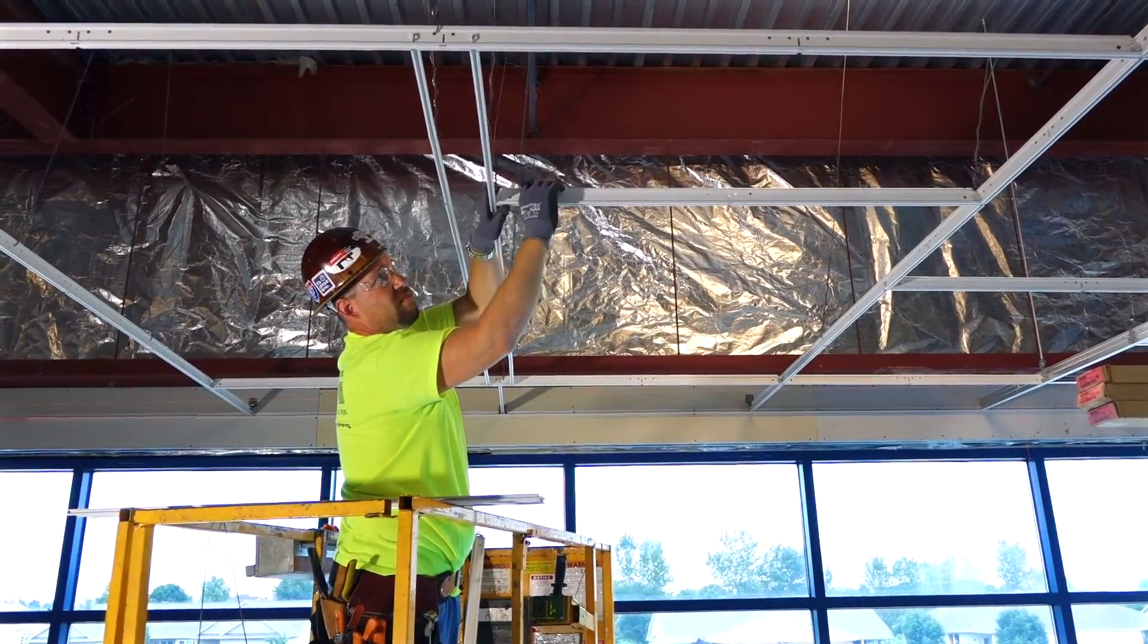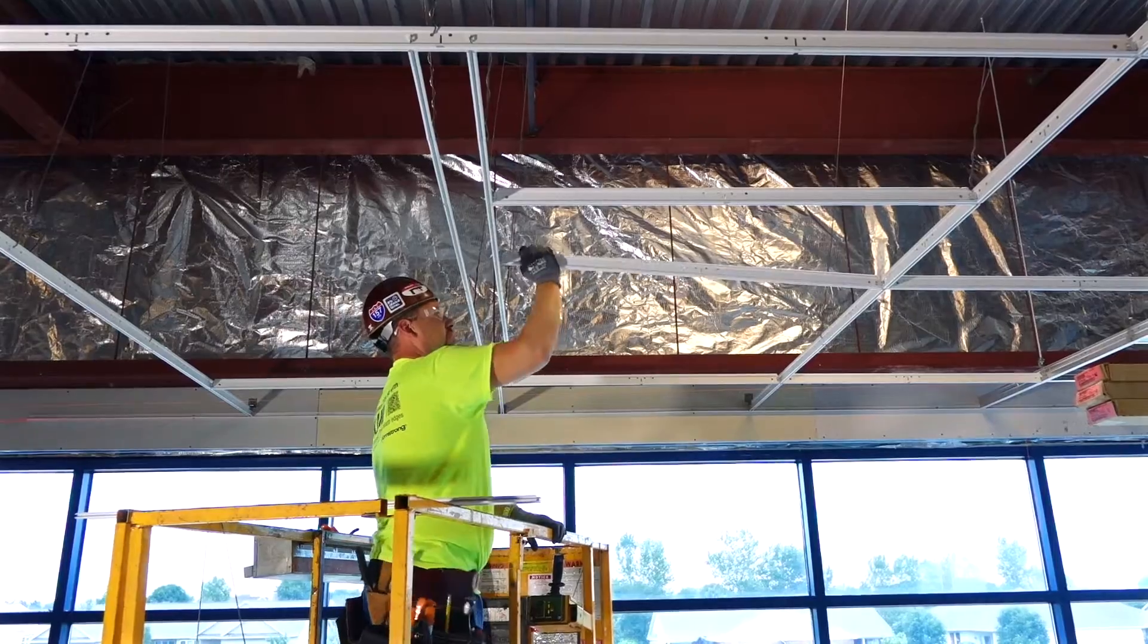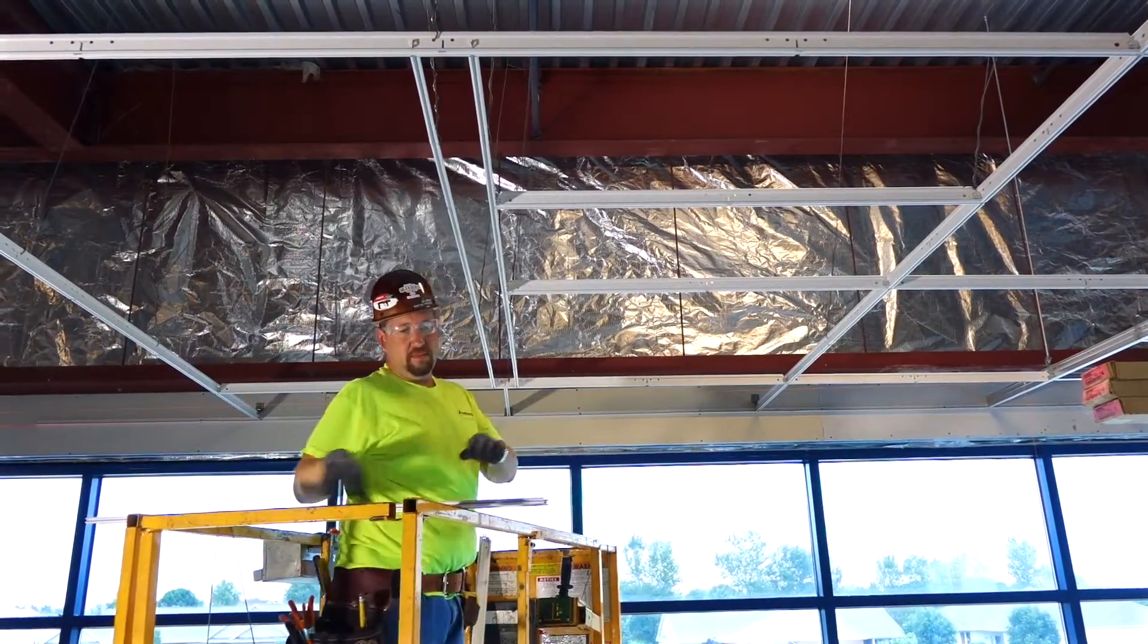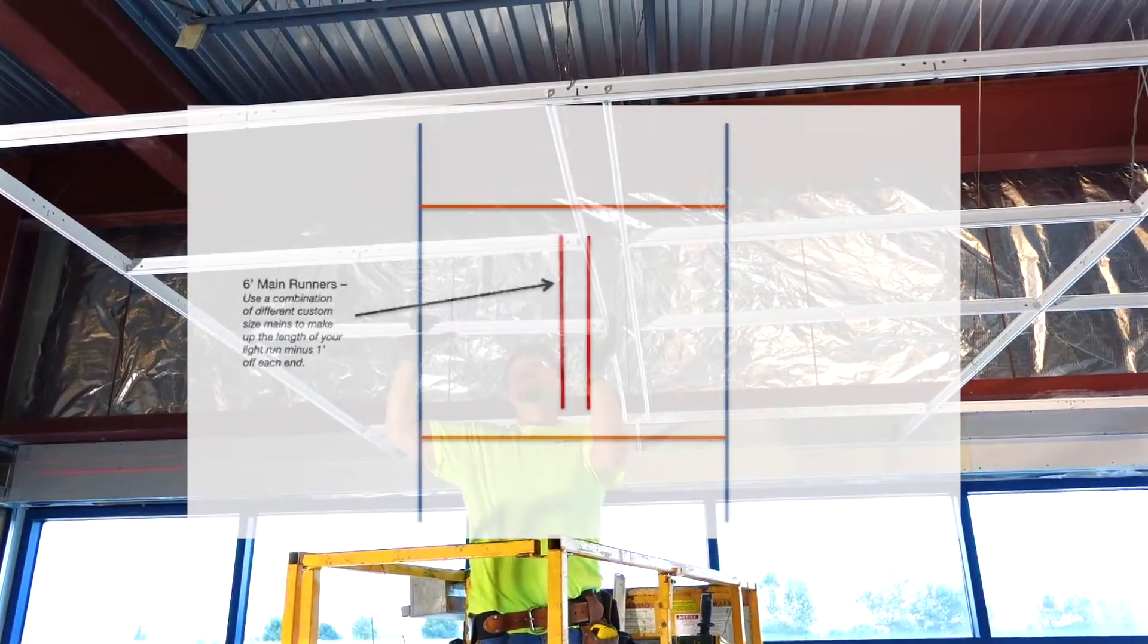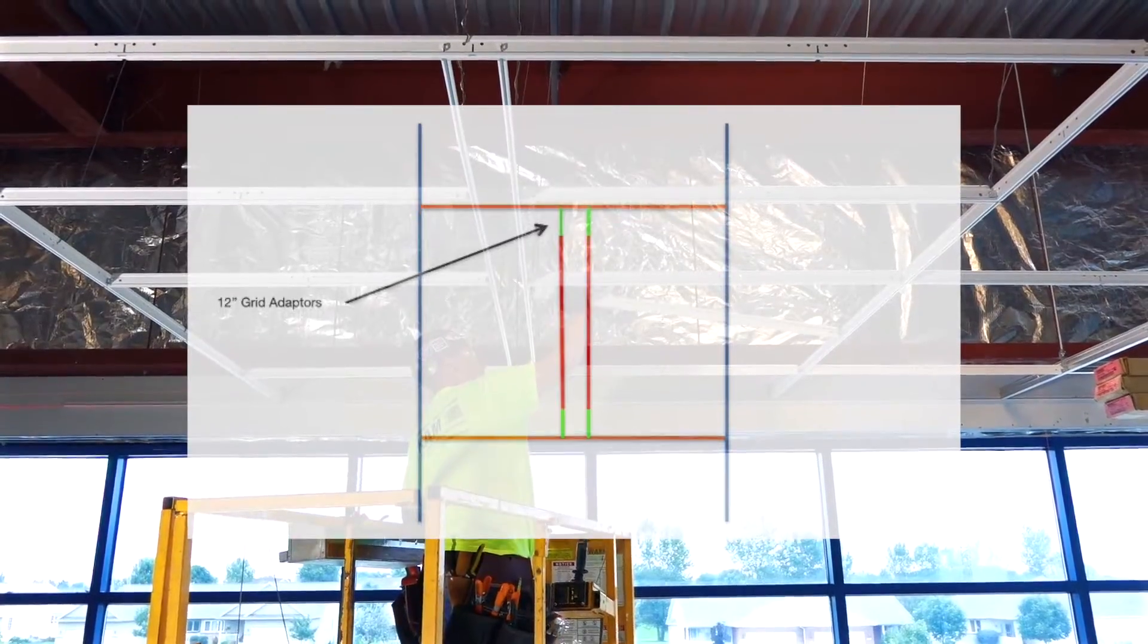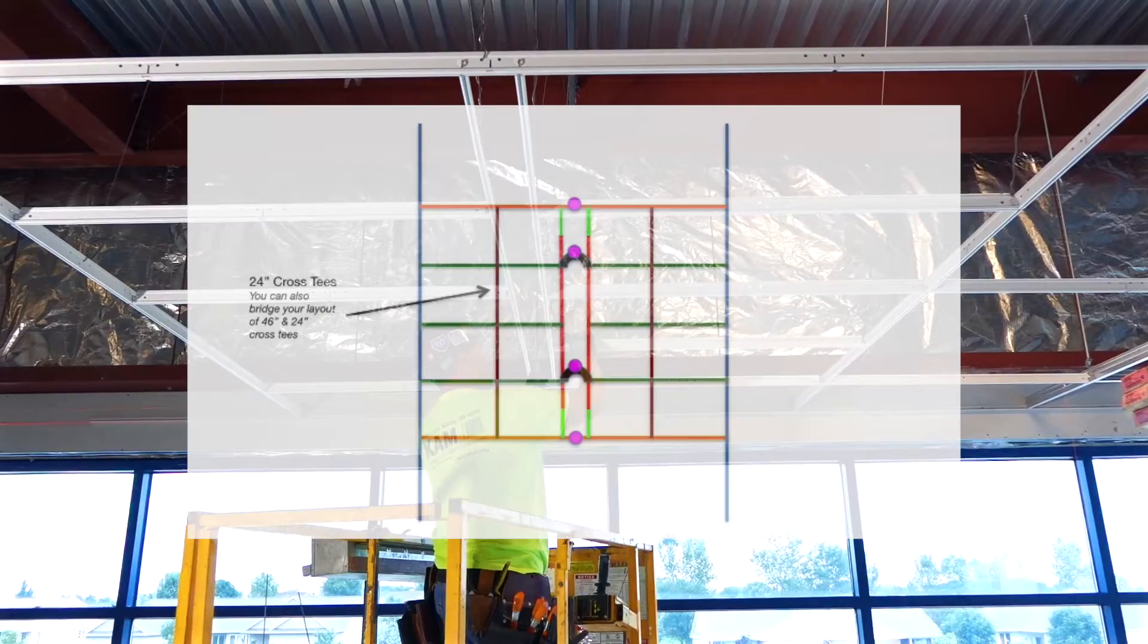To start, 4-inch on-center parallel main runners span whatever length your fixtures will run, continuous or non-continuous. In this video, we are installing 8 feet of XAL zero-plenum fixtures.